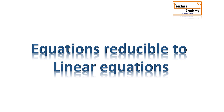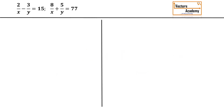Today we'll be studying about some equations which are not linear but they can be converted into linear equations by substitution. Our first example is 2/x minus 3/y equal to 15 and 8/x plus 5/y equal to 77. Now as these equations contain the variables in the denominator, even after simplifying we won't get a linear equation. Hence these are nonlinear equations.